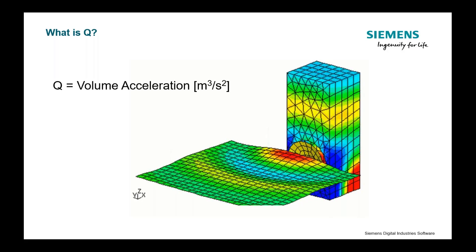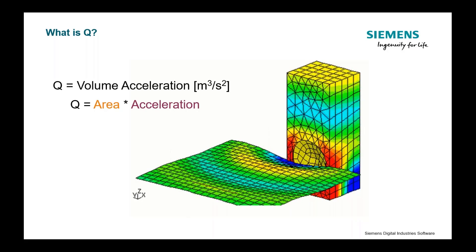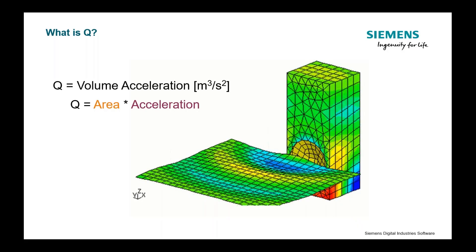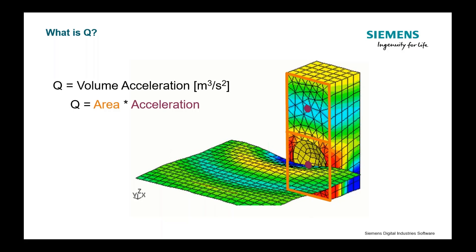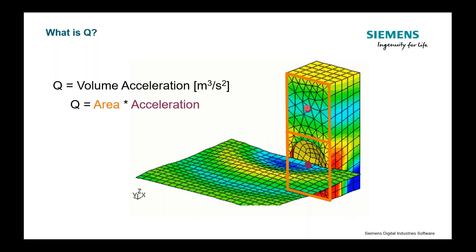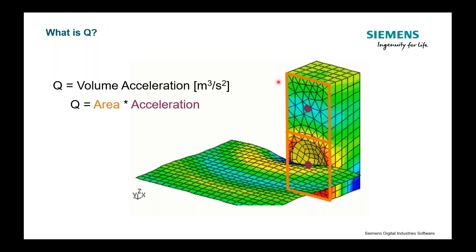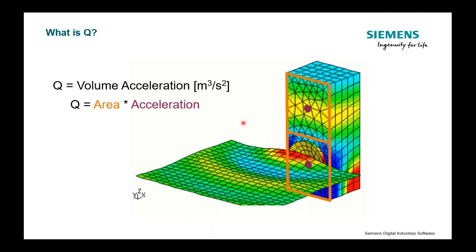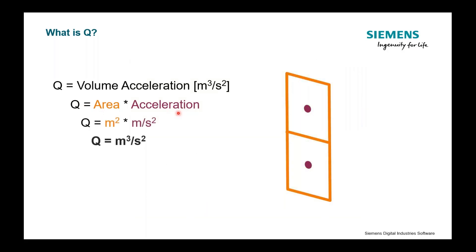How do I measure volume acceleration? Think of this as really an area multiplied by an acceleration. So if we take this speaker and break it down into some sub-areas, and then measure the acceleration at those points — I could put an accelerometer in the center of that speaker cone. I have a given area that I can measure that acceleration over. So I have an area and an acceleration: meters squared times meters per second squared gives me meters cubed per second squared, or a volume acceleration.